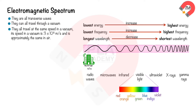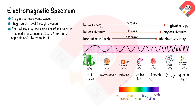The wavelength of radio waves is approximately the size of a building. Microwaves are approximately the size of a baseball. Infrared is approximately the size of a pinpoint. Visible light is approximately the size of a bacterium. Ultraviolet is approximately the size of a virus. X-rays are approximately the size of an atom. Gamma rays are approximately the size of subatomic particles. The higher the frequency, the higher the energy of the electromagnetic waves.